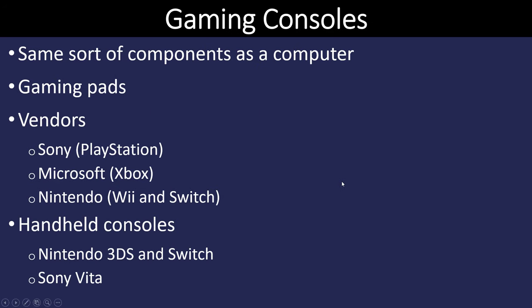Many of you are probably familiar with gaming consoles. They are small computers that run a proprietary operating system. PlayStation and Xbox are the two most common vendors for gaming consoles, and then there are handheld devices such as the Nintendo 3DS Switch and the Sony Vita.